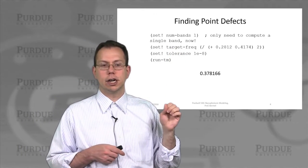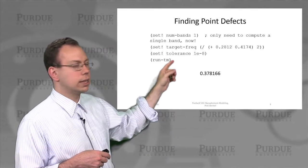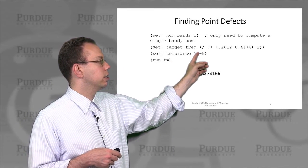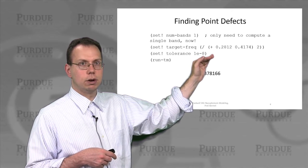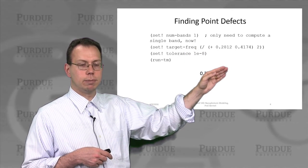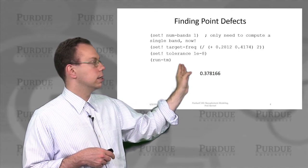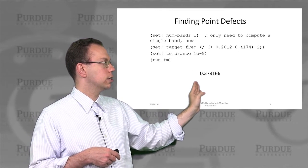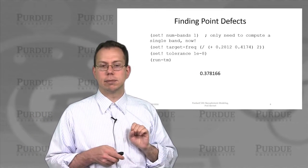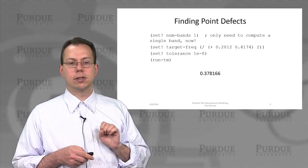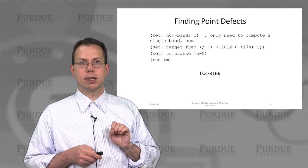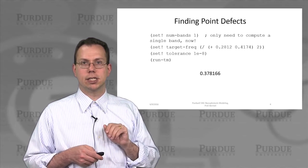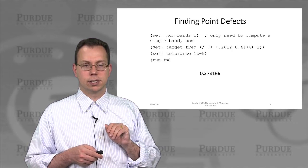We can also do the calculation for the single band we want using the targeted eigensolver. We set the target frequency to roughly halfway between the top of the lower band and the bottom of the upper band, and set a very tight tolerance. The resulting frequency comes out to about 0.378, which is actually much closer to the top than the bottom.